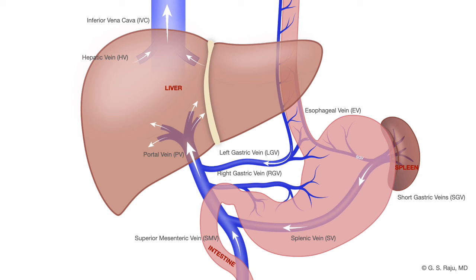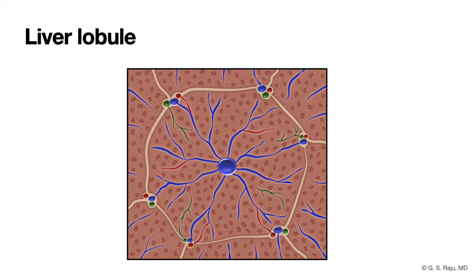We talked about how the portal vein divides into branches and becomes capillaries. Let us look at a piece of the liver under the microscope. The basic unit of the liver is the liver lobule, just as the basic unit of the kidney is the nephron and glomerulus. So let us look at the liver lobule.